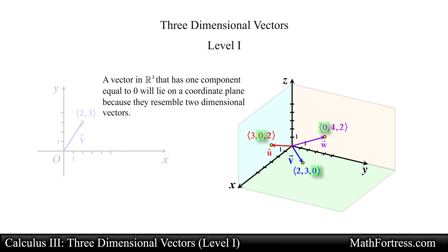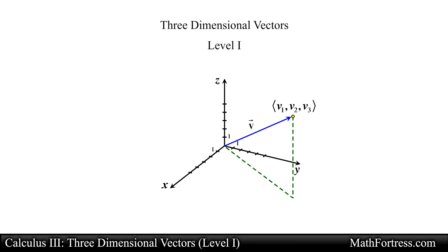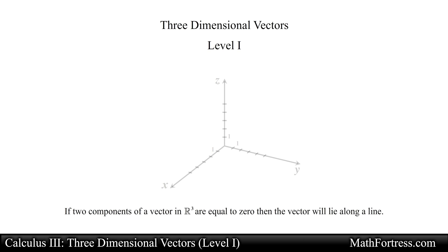In general, a vector located in space will have three components and are denoted by ordered triples as opposed to ordered pairs. If two components of a vector in R³ are equal to 0, then the vector will lie along a line. For example, the following vectors each have two components equal to 0 and they lie in the direction of the x-axis, y-axis, and z-axis respectively.